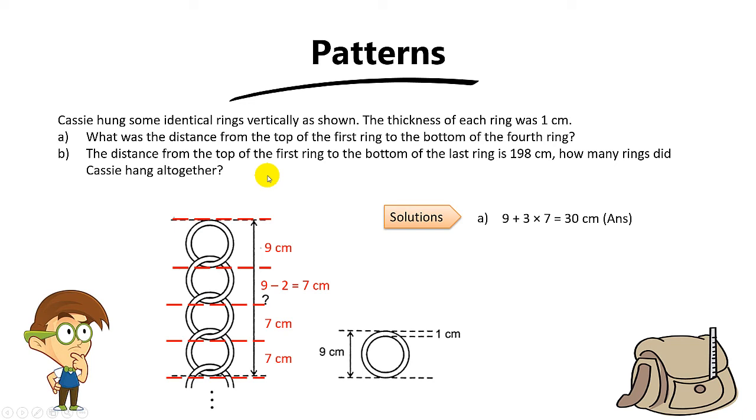Okay, recall how to do this question. Alright, the first step is to take 198 minus 9. Okay, because 9 is the length of the first ring. Alright, you get 189cm. Okay, then you take 189 divided by 7 to find how many intervals are there.